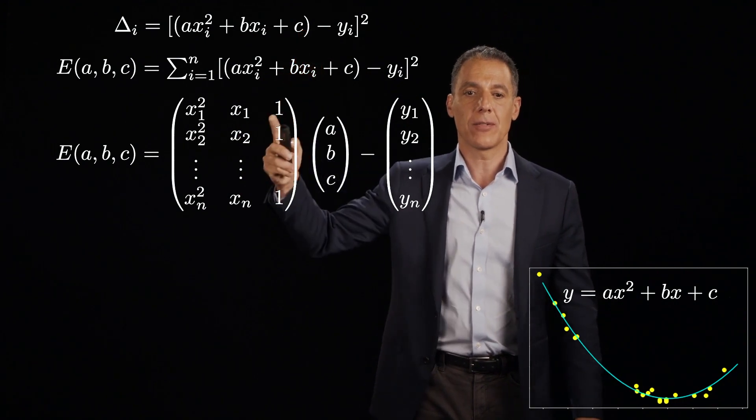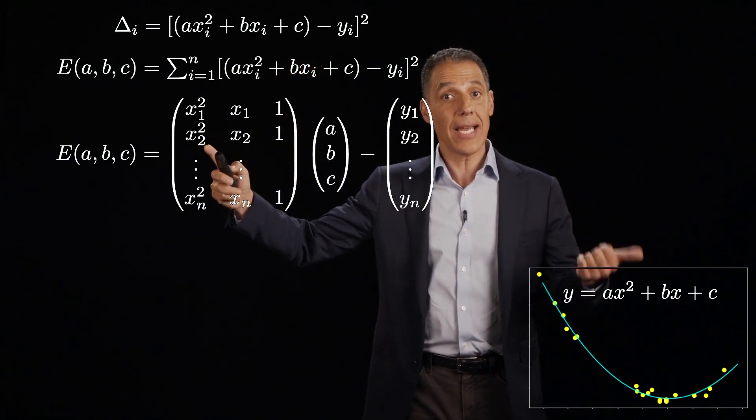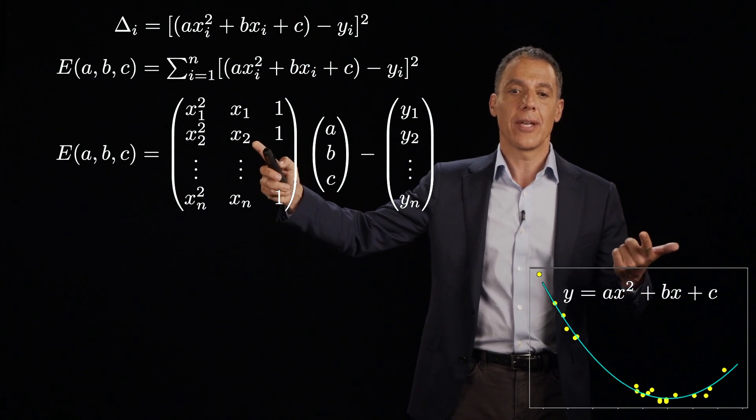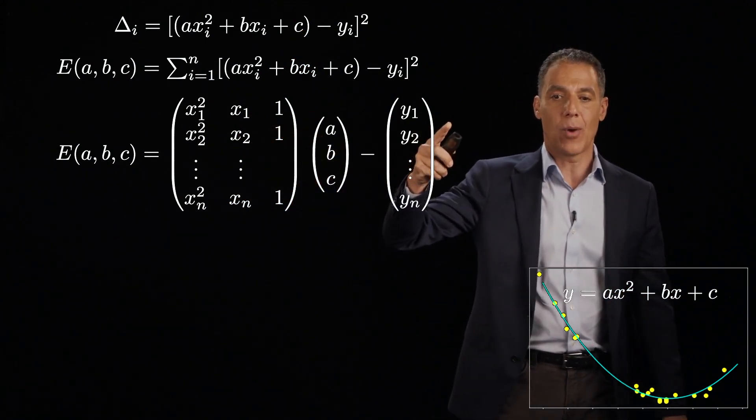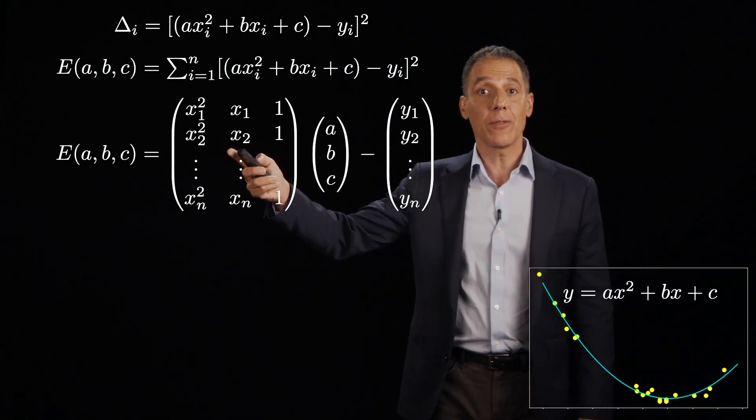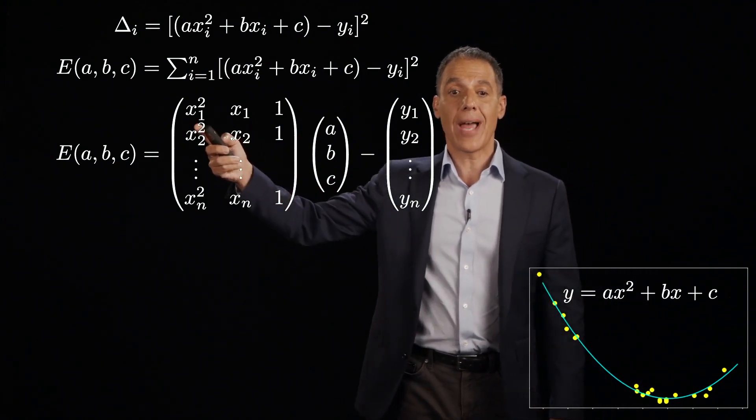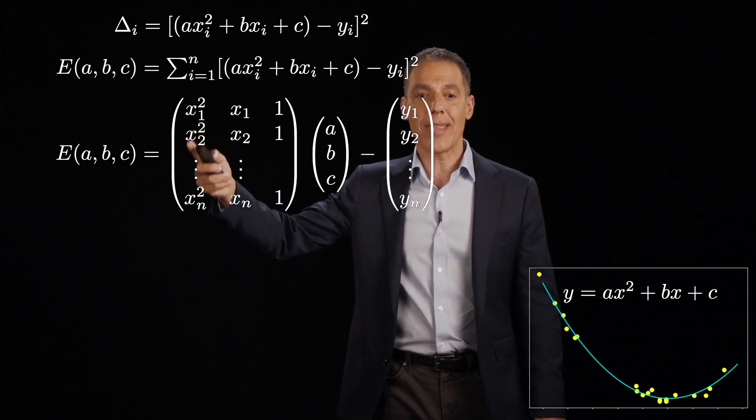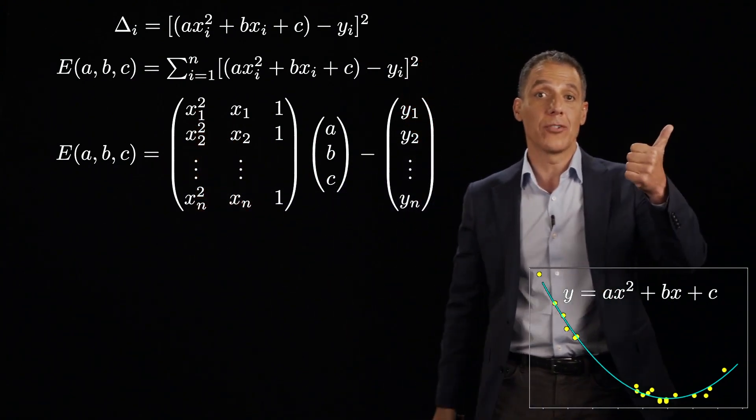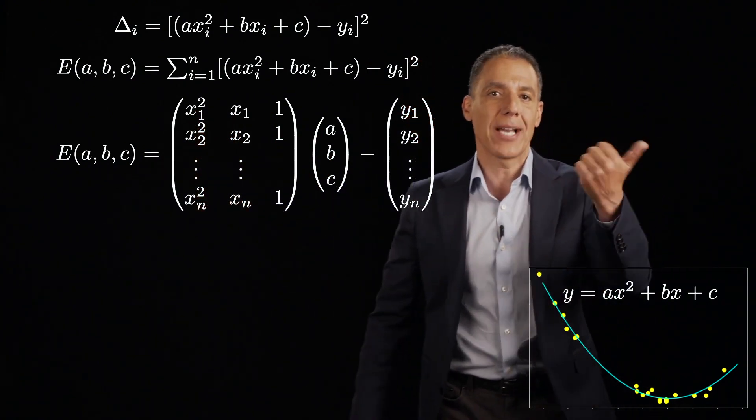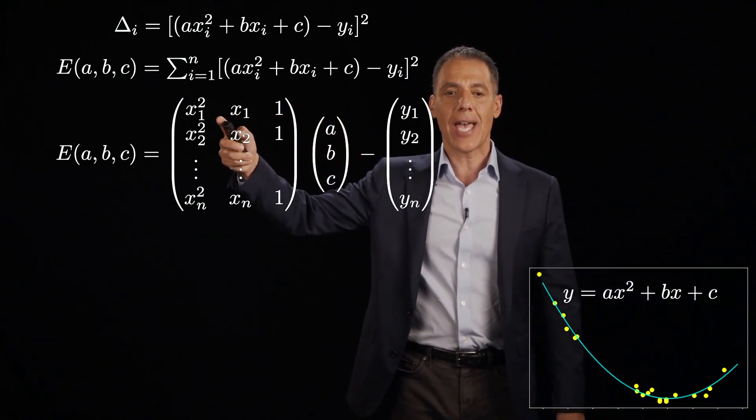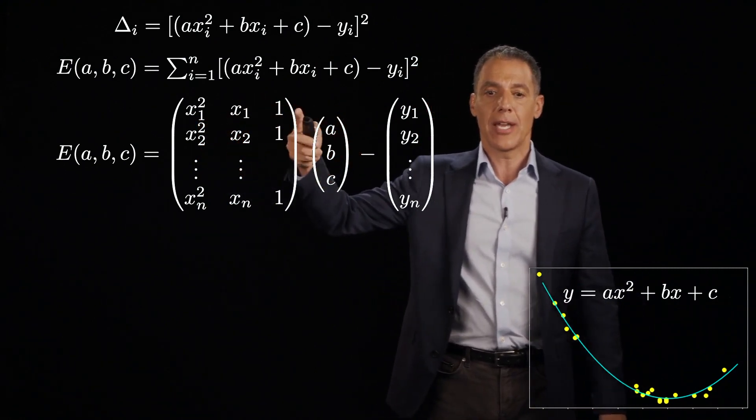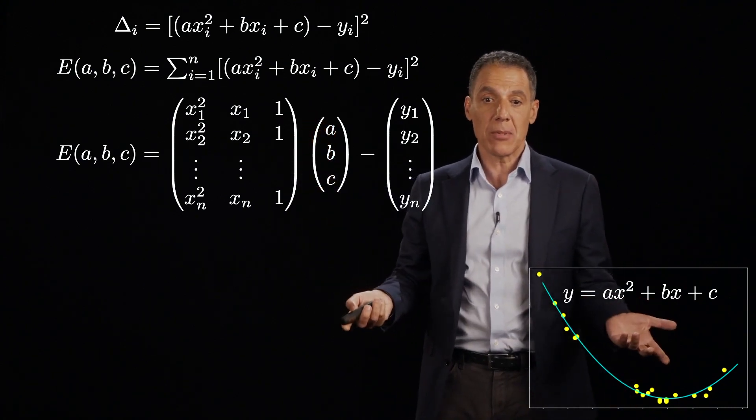What are the unknowns? A, B, and C, the parameters of the parabola. All right. What multiplies A? X squared. What multiplies B? X. What multiplies C? Nothing. So I'm going to put in the first row of this X matrix, I'm going to put X1 squared, X1, and 1. So again, the X1 squared multiplies the A. The X1 multiplies the B. The 1 multiplies the C. AX squared plus BX plus C. That's what's in my error function.